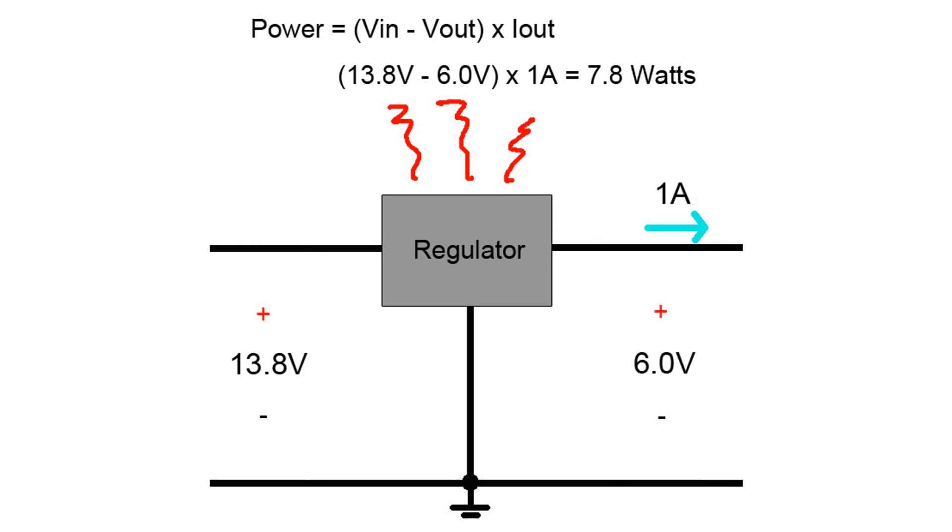Now if you were to power the LM317 from a higher voltage source, like a lead acid battery charged to 13.8 volts, all of a sudden things get a lot hotter.